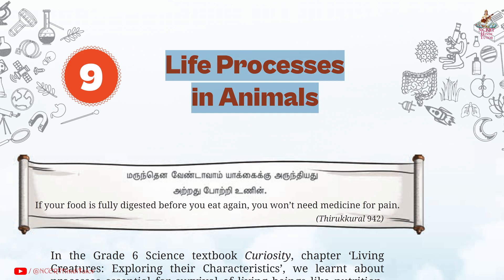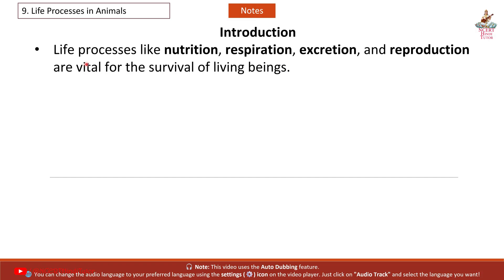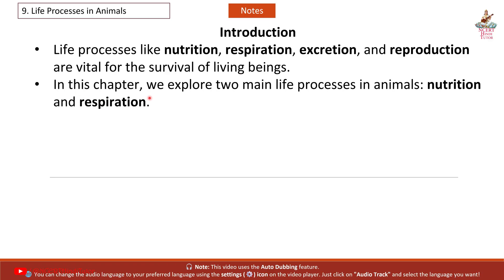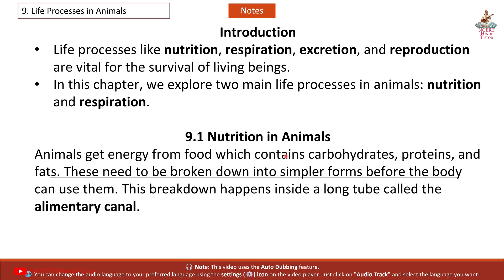Chapter 9: Life Processes in Animals — Short Notes and Summary from Grade 7 Science Book 'Curiosity.' Life processes like nutrition, respiration, excretion, and reproduction are vital for the survival of living beings. In this chapter, we explore two main life processes in animals: nutrition and respiration. Animals get energy from food, which contains carbohydrates, proteins, and fats. These need to be broken down into simpler forms before the body can use them. This breakdown happens inside a long tube called the alimentary canal.